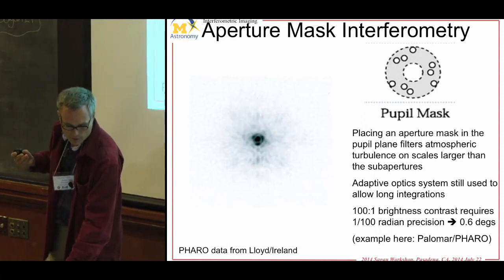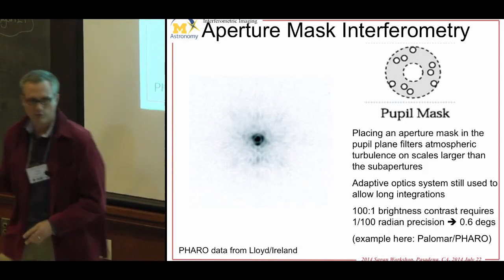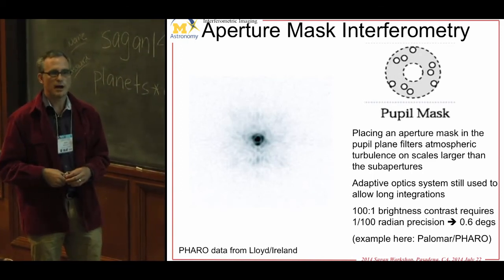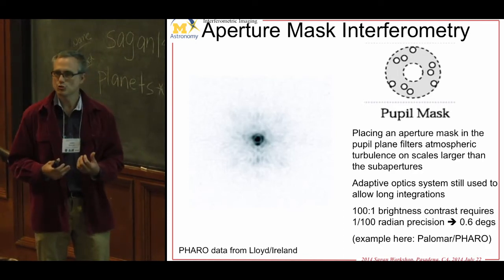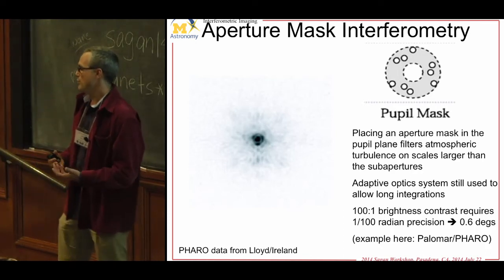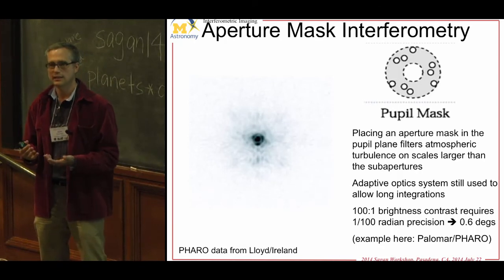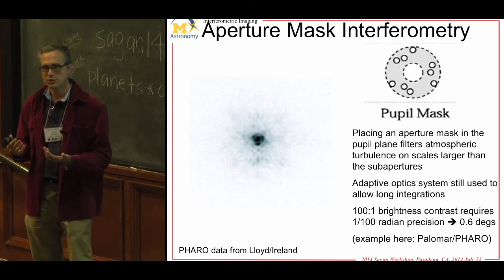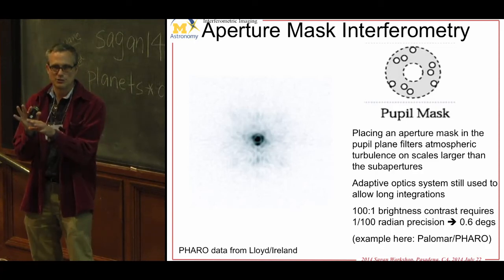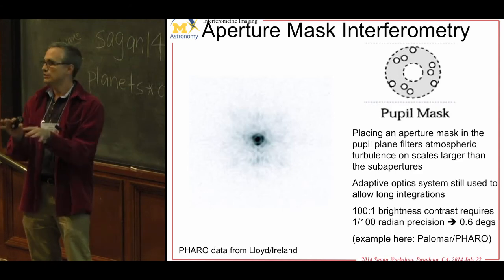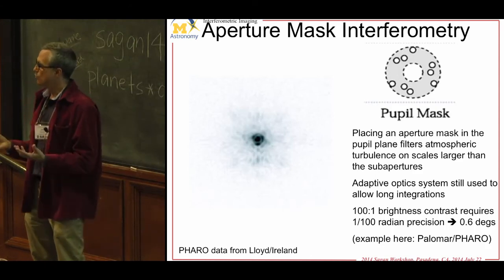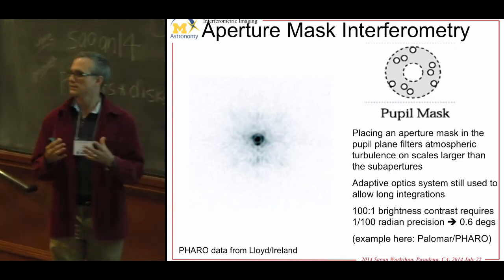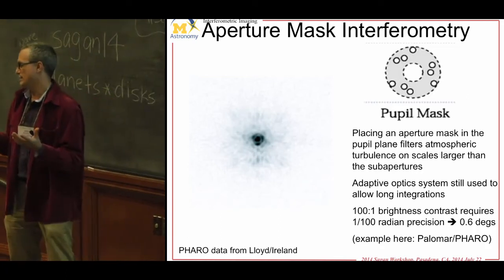One big advance was doing the first aperture masking behind an AO system — work with Jamie Lloyd, Mike Ireland, and Peter Tuthill. What that lets you do is long integrations. Before, you had to freeze the atmosphere at a seventh of a second, limiting you to about fifth magnitude. With an AO system acting as a fringe tracker, it freezes the fringes mostly — not perfectly but mostly. You can then integrate for 10 seconds to a minute, going all the way down to K of 12 or 9, basically any YSO you want in nearby star-forming regions. That really opened up a niche to explore that range.